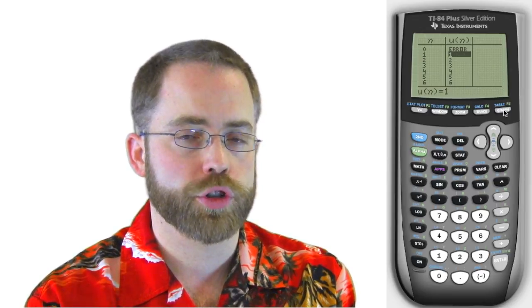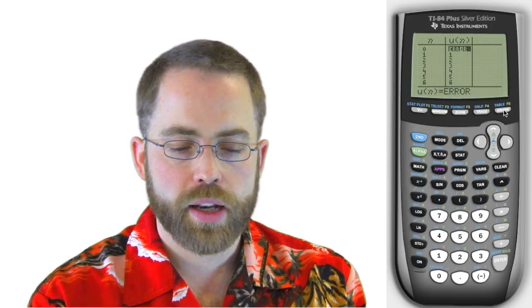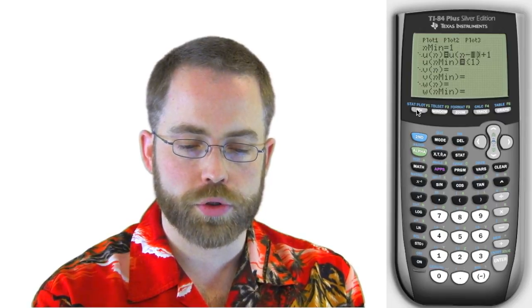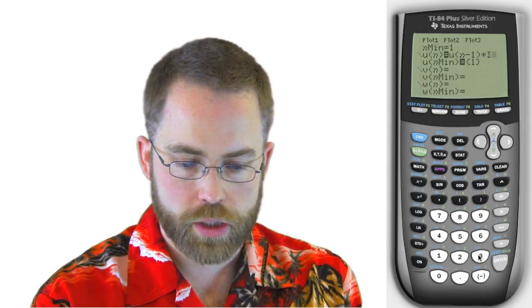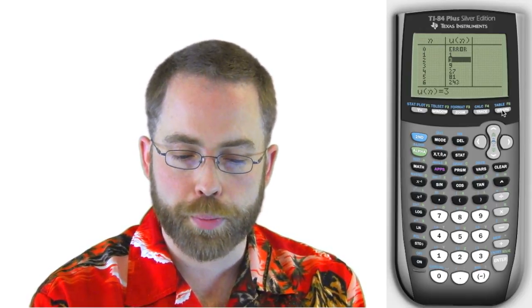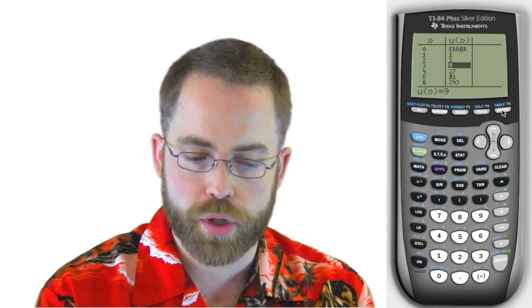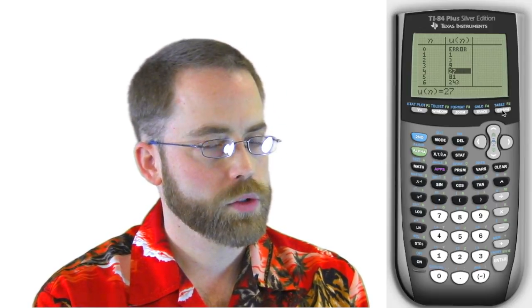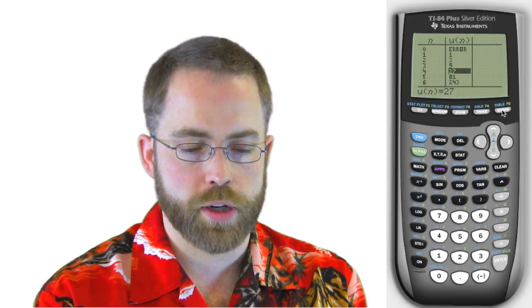Notice, too, we did not define anything before the first term. So the zeroth term is undefined. It gives an error message. Now, we could go, and we could make this much more interesting, and we could say each term is equal to the term before it times 3. And now if I go back to my table, you can see that we're going up multiplying by 3 every time, that the first term is equal to 1, then this next term is equal to the previous term times 3, and the next term is equal to the previous term times 3, and the next term is equal to the previous term times 3. So this is shooting up like a rocket here.